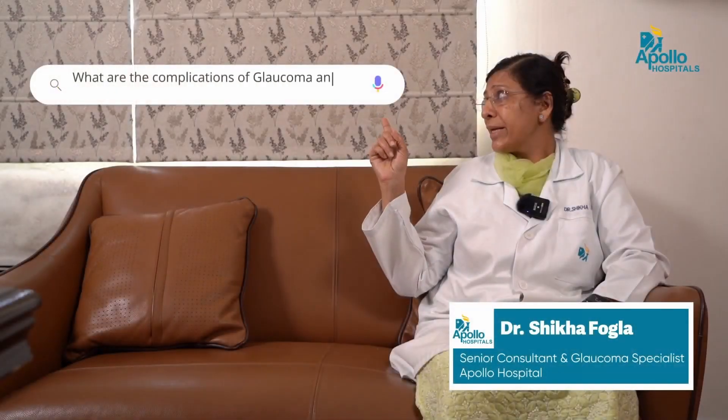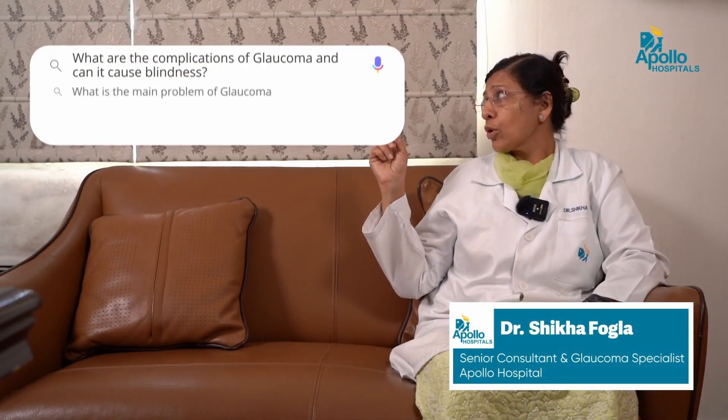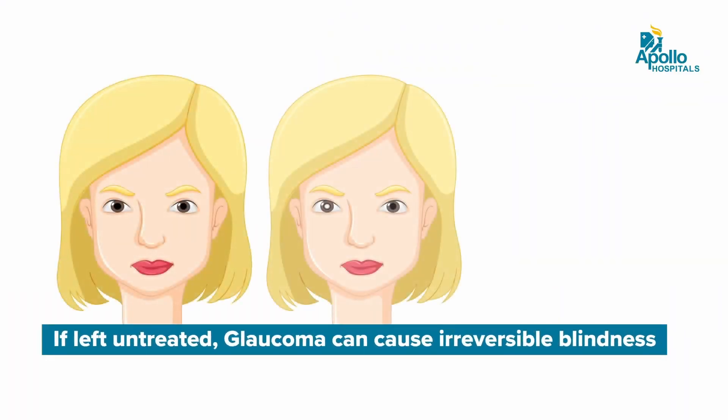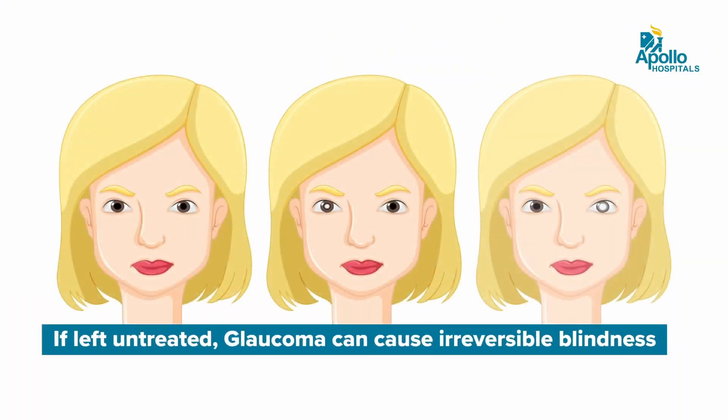What are the complications of glaucoma and can it cause blindness? Glaucoma, if left untreated, can cause irreversible blindness. The treatment is to hold the disease at whatever stage it is diagnosed, so it is very important to pick up the disease in the earlier stages.